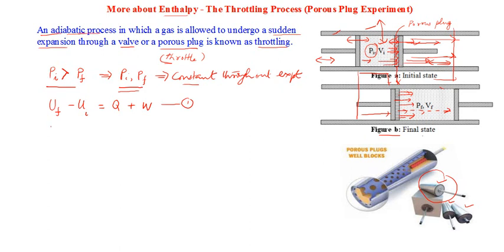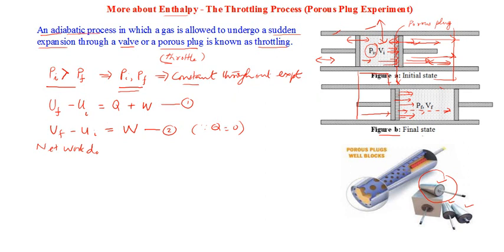Since q = 0 for the throttling process, we get Uf − Ui = w, where w is the mechanical work done in moving the two pistons. Both pistons are moved, so each contributes to the work. This is equation two, derived because q = 0 due to the adiabatic enclosure. Now let's calculate the net work done on the gas.